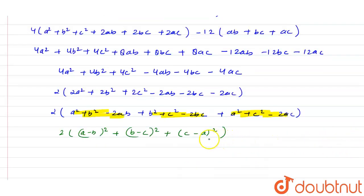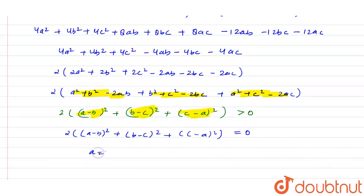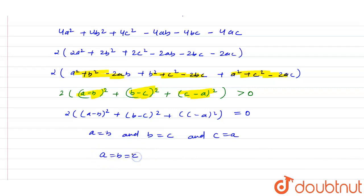For real roots, this expression is always greater than 0, because (a - b)², (b - c)², and (c - a)² are always positive terms. So the discriminant is always positive, hence the equation always has real roots. For equal roots, the expression equals 0, which is only possible when a = b, b = c, and c = a — meaning a = b = c. This is the required condition.